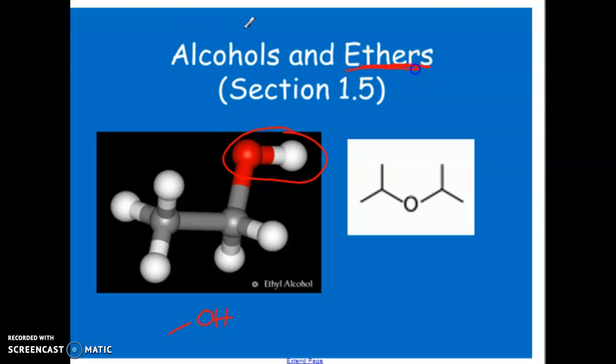An ether is anything that has a carbon-oxygen-carbon sandwich. So you have carbon, oxygen, and then another carbon. There could be other things going on on these carbons, but the oxygen in between the two carbons is what designates that something has an ether functional group.